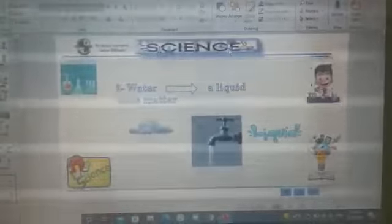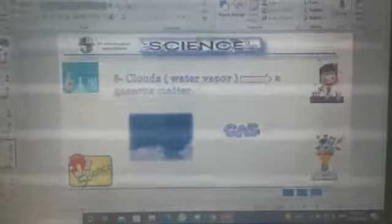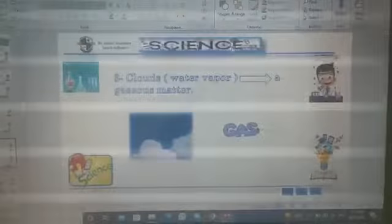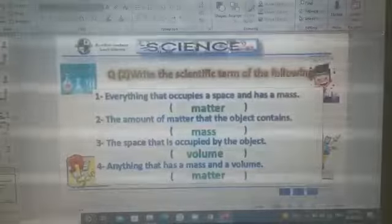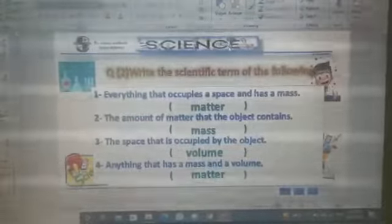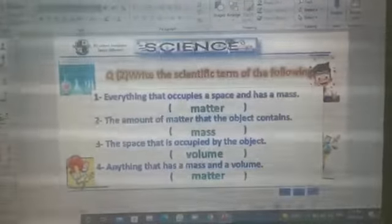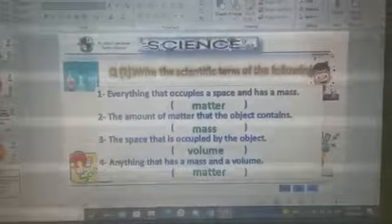So everything that takes up space and has mass is matter. The amount of matter that the object contains is mass. The space that is occupied by the object is volume. Anything that has mass and volume is matter.